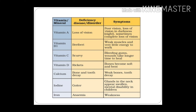Deficiency of Vitamin D causes rickets, in which bones become soft and bent. Vitamin D is also obtained from the sun and is known as the sunshine vitamin. Calcium is a mineral required for proper bones and teeth. Deficiency of iodine causes thyroid problems, that is goiter, in which the gland in the neck becomes swollen.